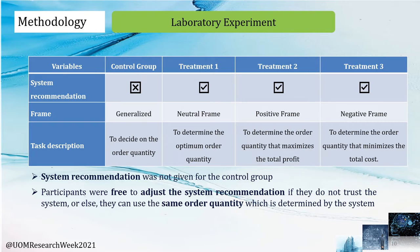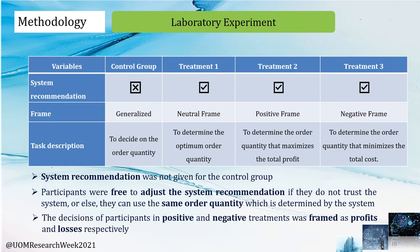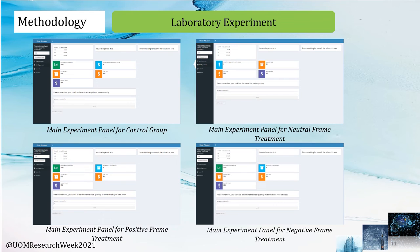Participants were given 60 seconds to determine and enter their replacement quantities in each round. In this laboratory experiment, except for the control group, other treatments included the system recommendation. If the participants do not trust the system, they are free to adjust the system recommendation, or they could use the exact system-recommended order quantity. However, the decisions of participants in positive and negative treatments were framed as profits and losses respectively. This slide illustrates the dashboards of the main experiment panels for all treatments.